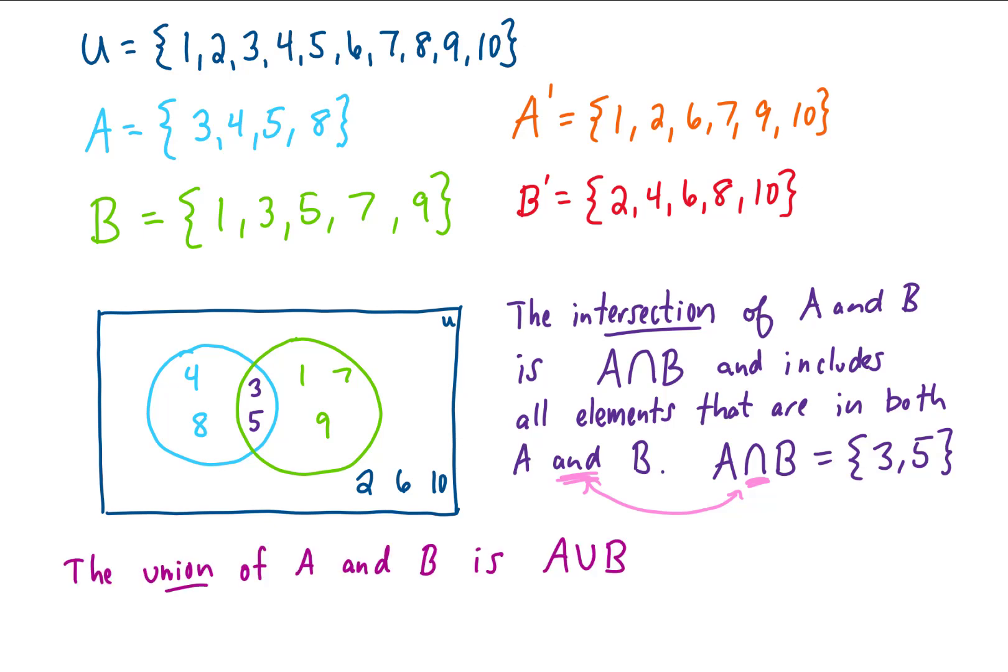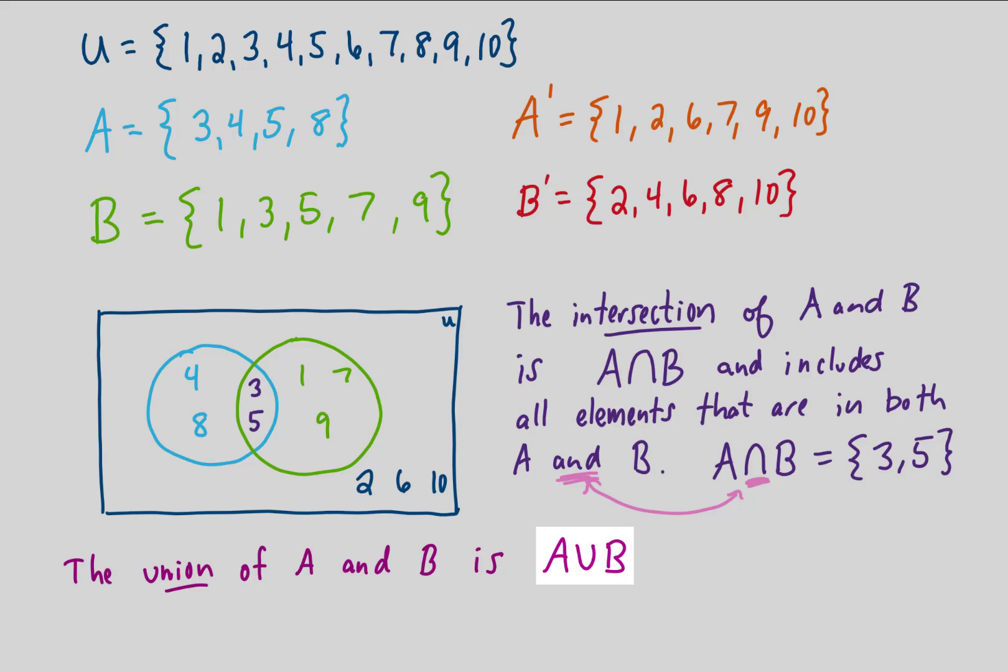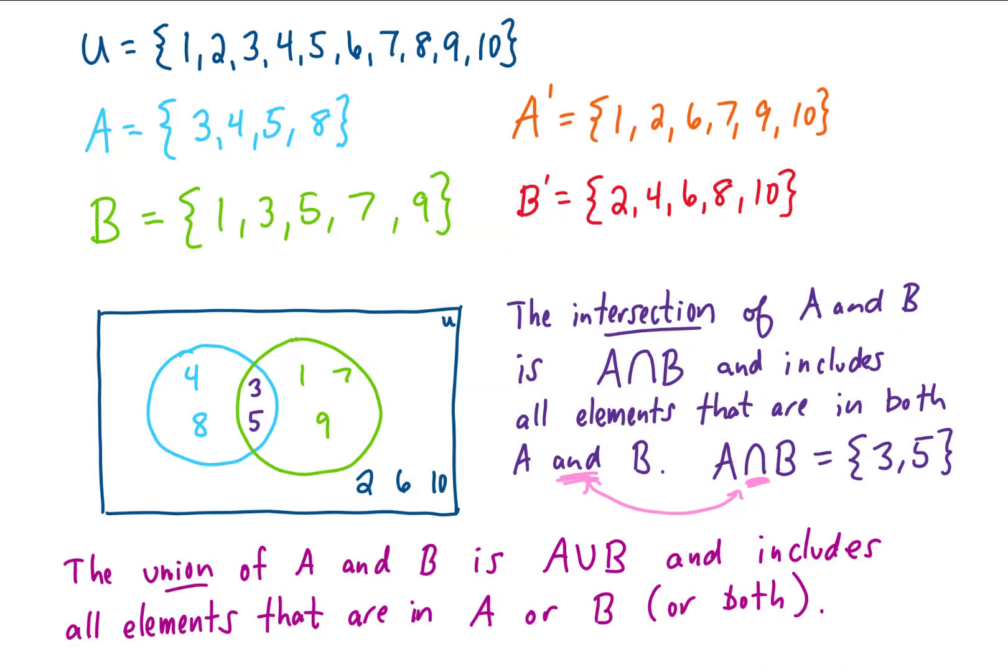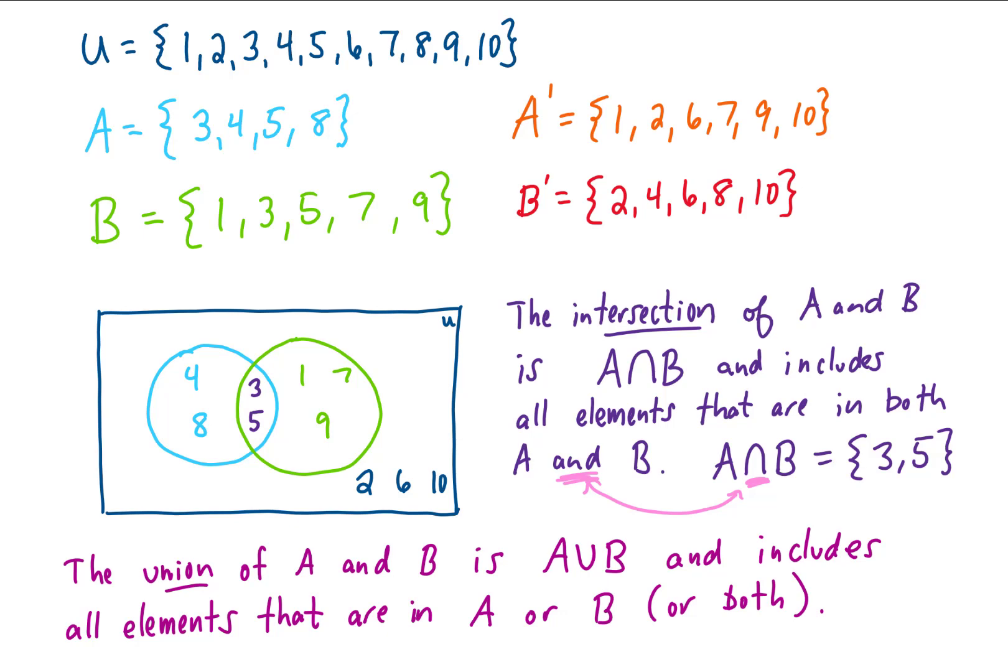So we define the intersection operation between sets. Now let's define the union. The union of A and B is denoted with this right here, basically a U in between A and B. And the union of A and B includes all elements that are in A or in B or in both sets.